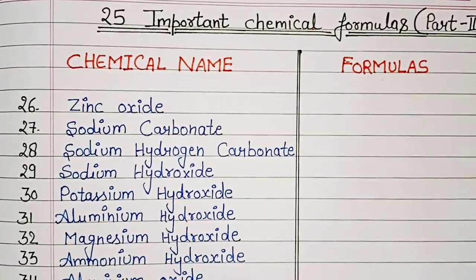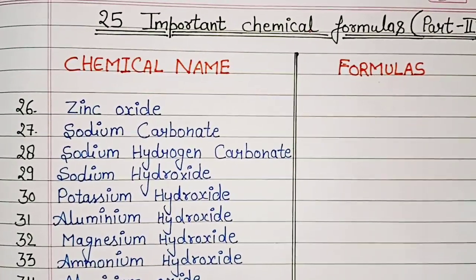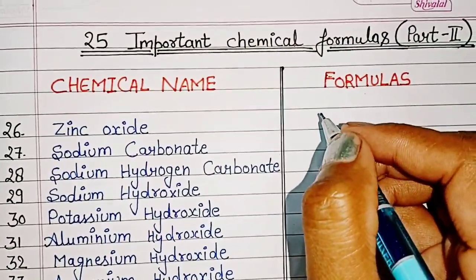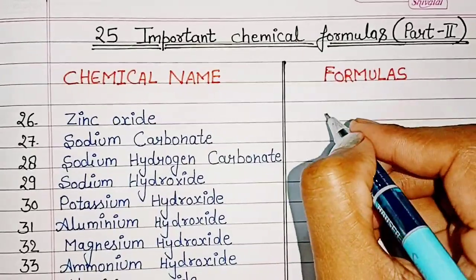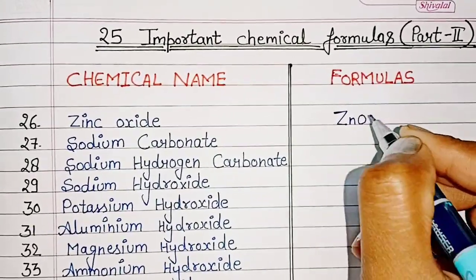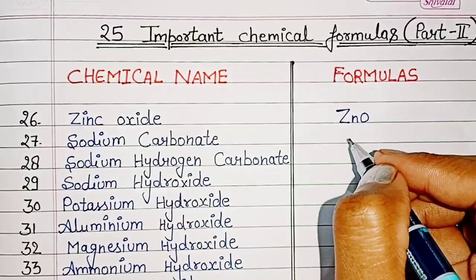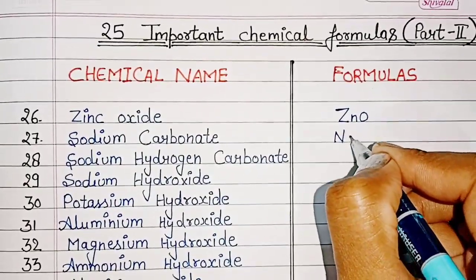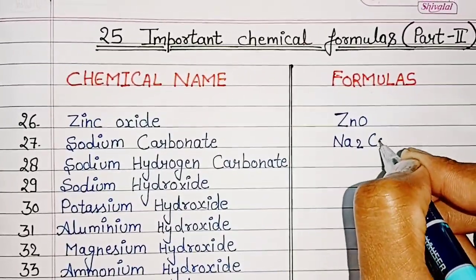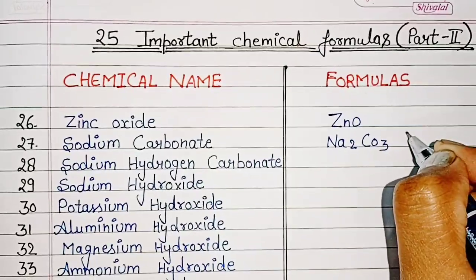25 important chemical formulas. Zinc Oxide: ZnO. Sodium Carbonate: Na2CO3 — also known as Washing Soda.